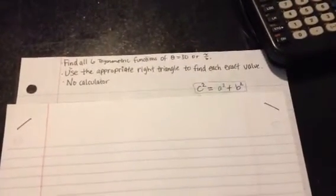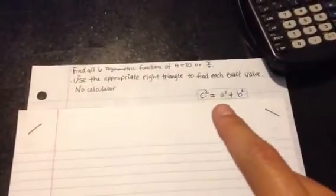You'll need to know what the Pythagorean theorem is, which is c squared equals a squared plus b squared. You'll also need to know the six trigonometric functions.